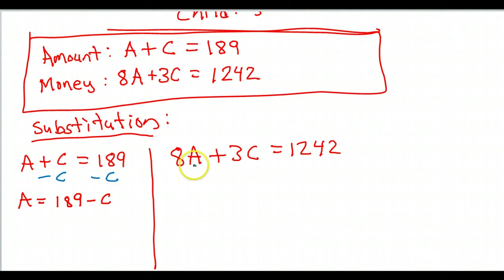That means next time I see an A, if I want to, I can write 189 minus C because they're equal. So, that's what I'm going to do. I can take this and substitute it for A in the other equation. So, this is going to become, if I just rewrite this, 8A plus 3C is equal to 1,242. See how all I did was I recopied the equation, but the spot where the A is, I left a parenthesis so I could substitute in something new. And that thing is going to be, of course, my 189 minus C.